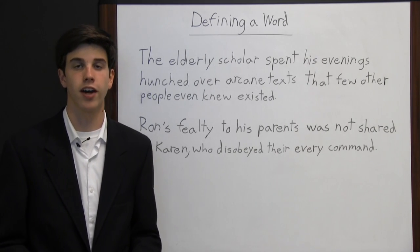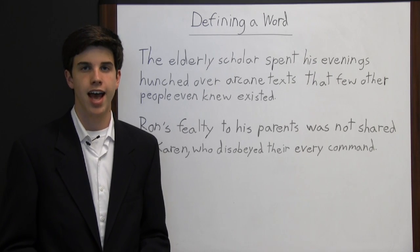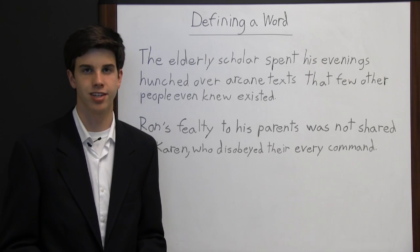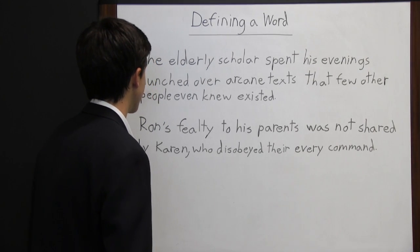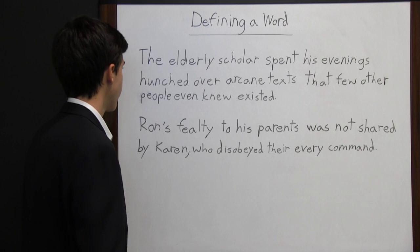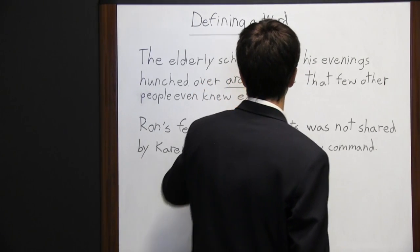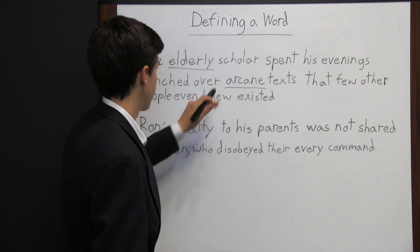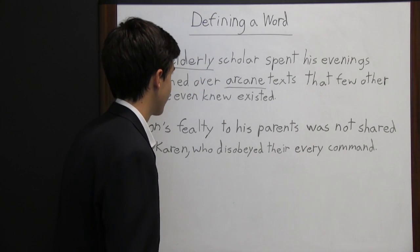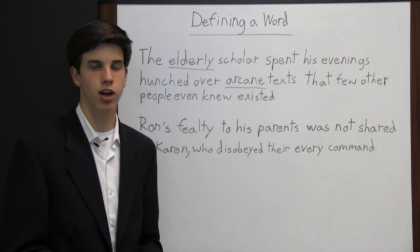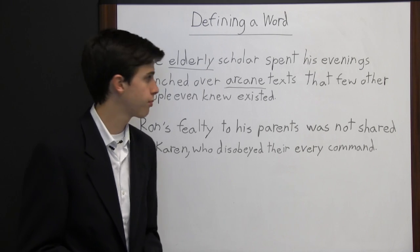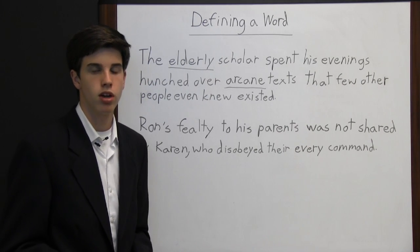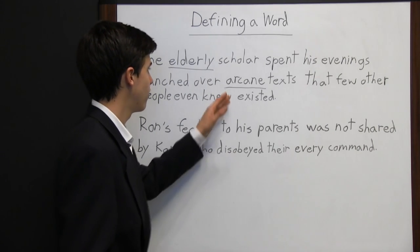Many times readers come across words they are unfamiliar with, so it's important that readers understand how to determine the definition of a word based on its context — looking at the words around it and how the word is used in the sentence. For example: 'The elderly scholar spent his evenings hunched over arcane texts that few other people even knew existed.' The unfamiliar word is 'arcane,' but you can determine its definition from context: only an elderly scholar studies these texts, implying it's complex, and 'few other people even knew existed' suggests it's rare or obscure.